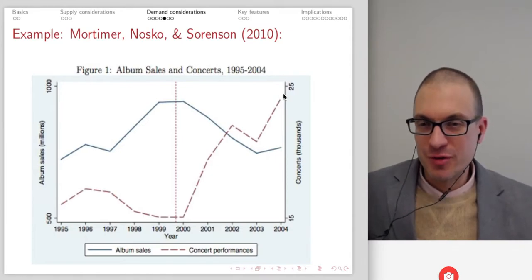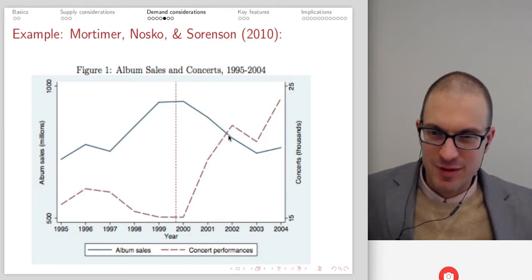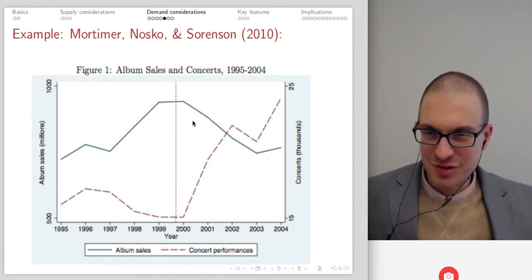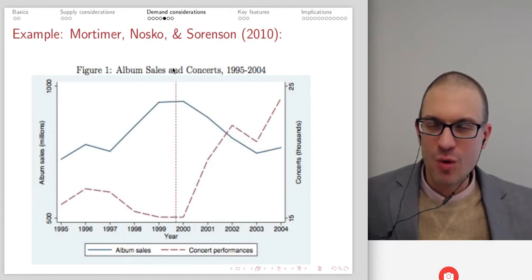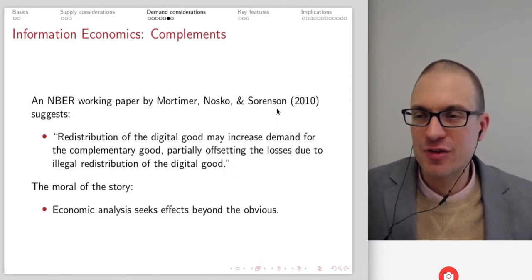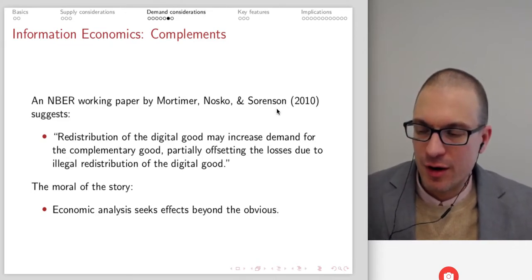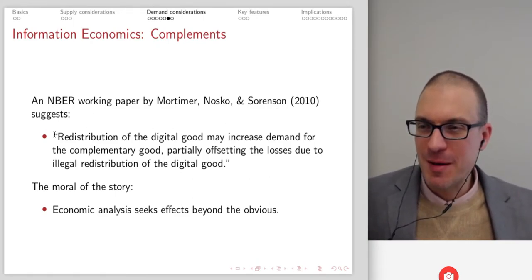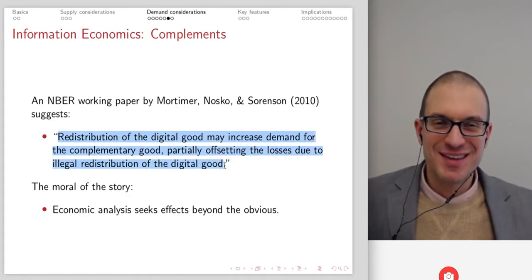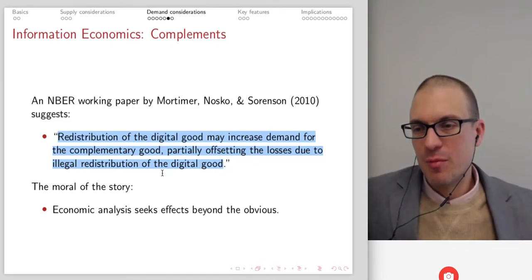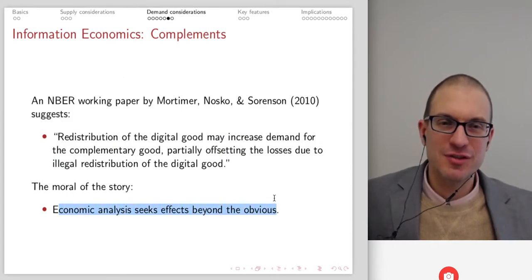What's going to end up happening is ultimately I'm going to buy a concert ticket. This is exactly making the point: you'll be able to reach new fans as a result of reducing the access cost for an experience good. The key excerpt from the paper: redistribution of a digital good may increase demand for the complementary good, partially offsetting the losses due to illegal redistribution of the digital good. The moral of the story — economic analysis seeks effects beyond the obvious. That's one of the things we're doing when thinking about economics: looking for the non-obvious, which was kind of the ethos of Freakonomics.